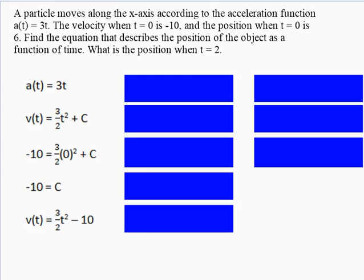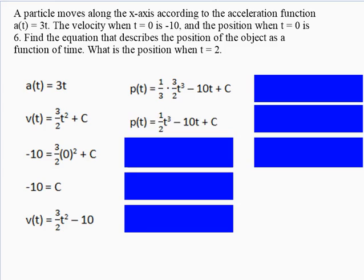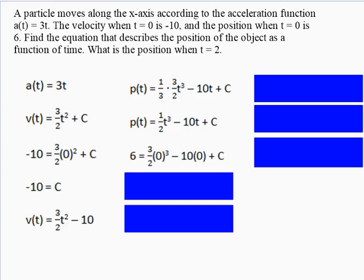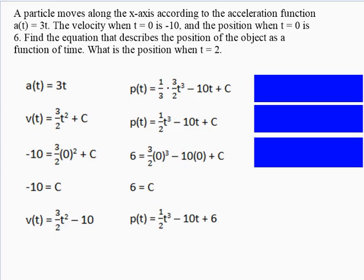We want to go all the way down to position, so we integrate the velocity function. Integrating (3/2)t² - 10 gives us (1/2)t³ - 10t + C. We're given that when t = 0, position is 6. Plugging in 0 for t, we get C = 6.